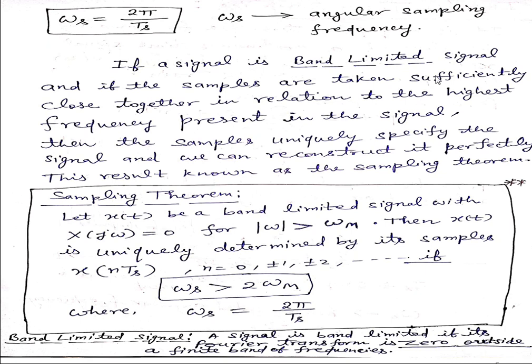So if the samples are taken sufficiently close together, close together means we are considering more number of samples. If we have to consider more number of samples, then Ts should be reduced. So Fs and omega s will be larger frequency present in the signal. Then the samples uniquely specify the signals, we can reconstruct it perfectly, this is known as sampling theorem.